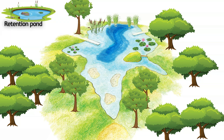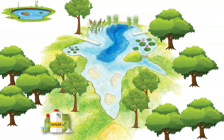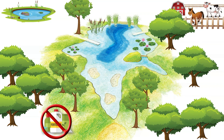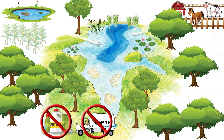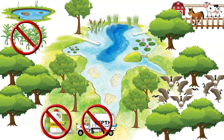Construct small silt retention ponds in the watershed. Eliminate yard fertilizers. Fence livestock away from the pond's edge. Avoid areas with numerous or poorly maintained septic systems. Avoid areas surrounded by agriculture fields and runoff. And discourage overabundant waterfowl such as geese.